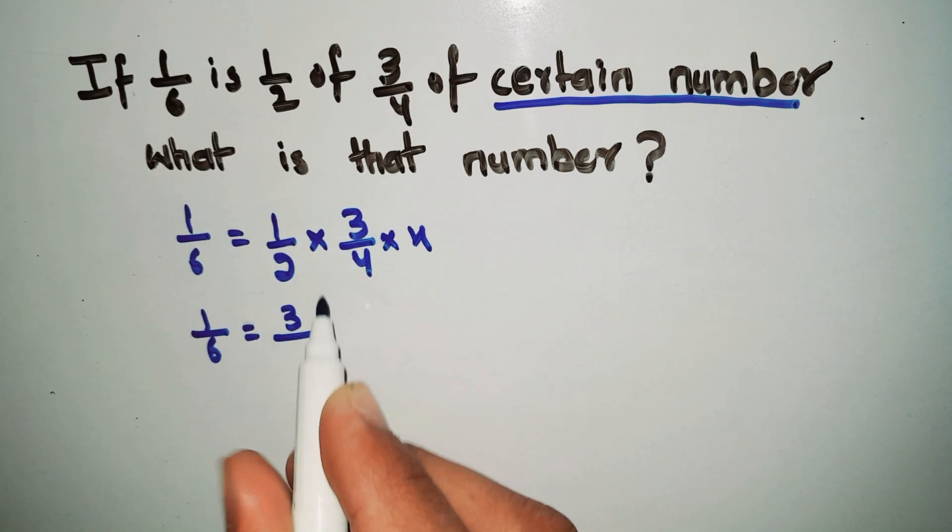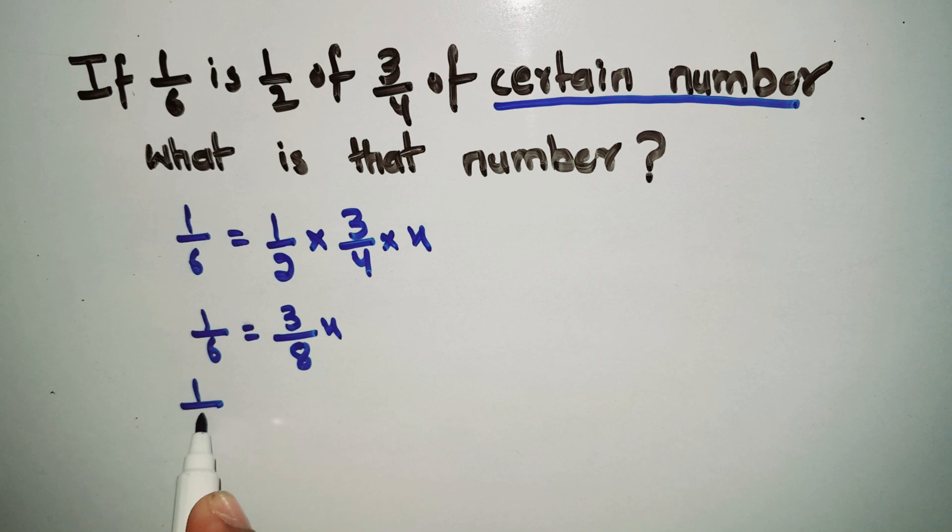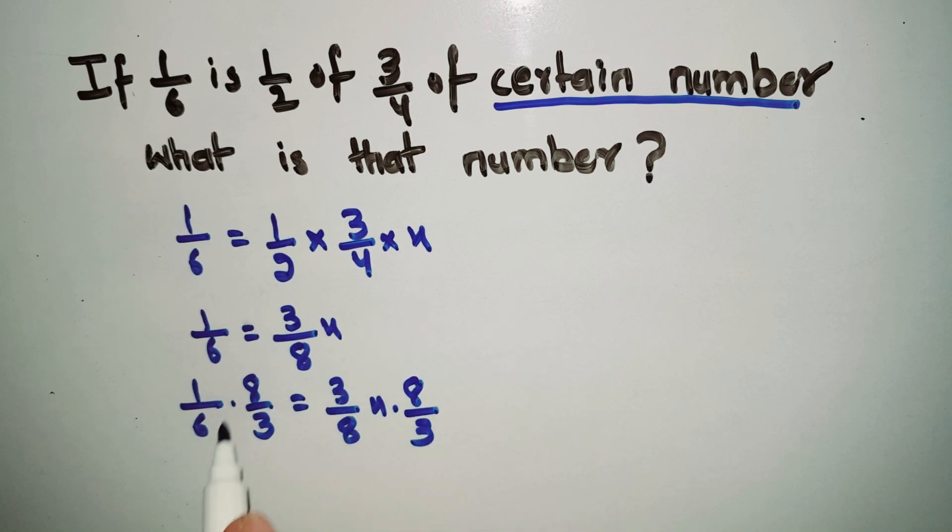So 1/6 equals 3/8 times X. Now we multiply both sides by 8/3, so 1/6 times 8/3 on this side and 3/8 X times 8/3 on the other side.